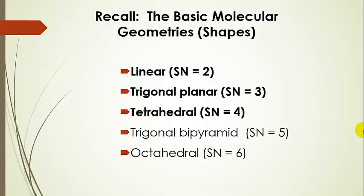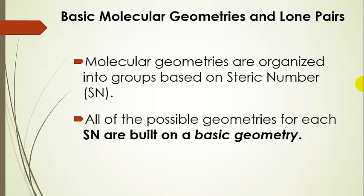What we're going to do now is take steric numbers two through four and look more closely at the different geometries we can derive from those steric numbers based on the number of lone pairs on the central atom. We organize molecular geometries into groups based on steric number, and we use the basic geometry to build additional geometries when lone pairs are on the central atom.